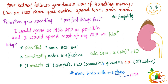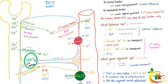Instead of just memorizing facts, if you understand the grand theme you can understand kidney physiology easily. Your kidney follows grandma's way of handling money: live on less than you make, spend less, save more — frugality. Put first things first. The kidney listens to grandma: spend as little ATP as possible, and if you're going to spend ATP anyway, spend it on sodium. Why sodium? Sodium is very plentiful, osmotically active, and an effective osmol. It attracts chloride, water, glucose, and amino acids — many birds with one stone.